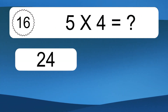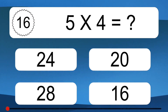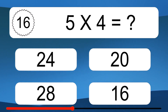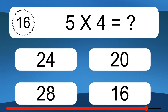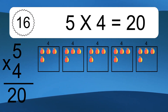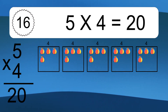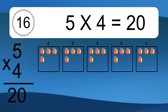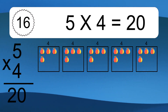5 times 4 equals what? 5 times 4 equals 20. We have 5 boxes, and each box has 4 colorful balls inside. If you count all the balls in all the boxes together, you will have 5 times 4 balls. This equals 20 balls.